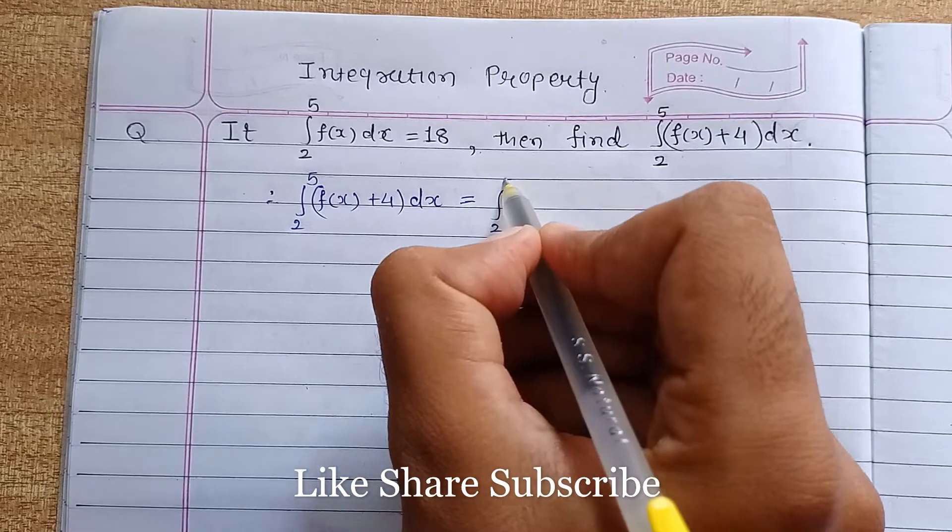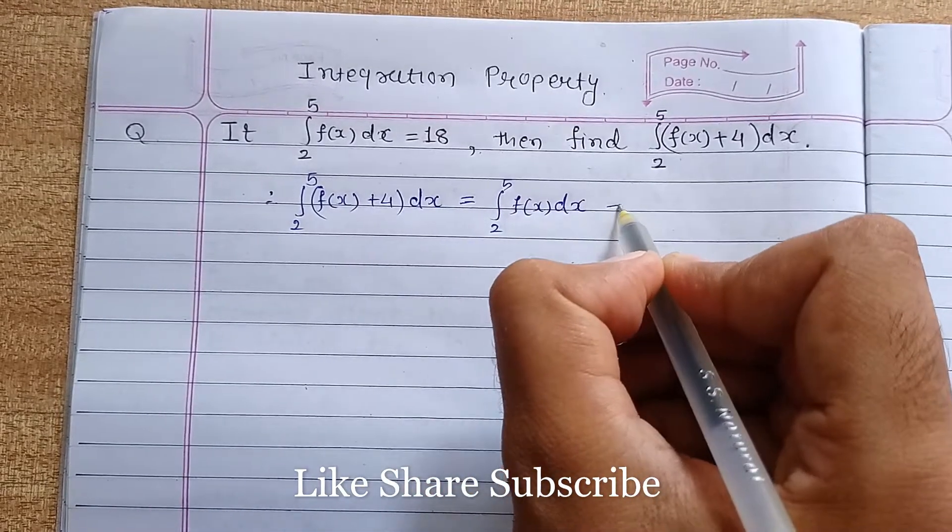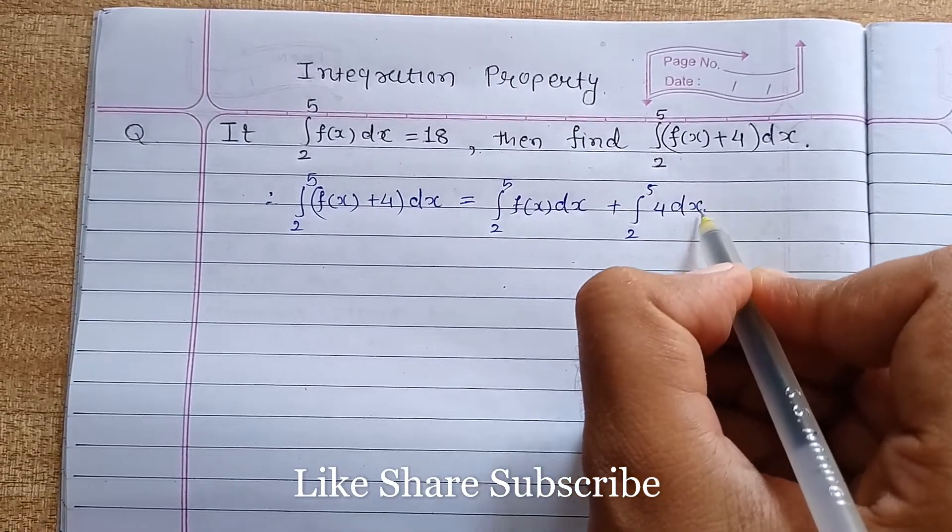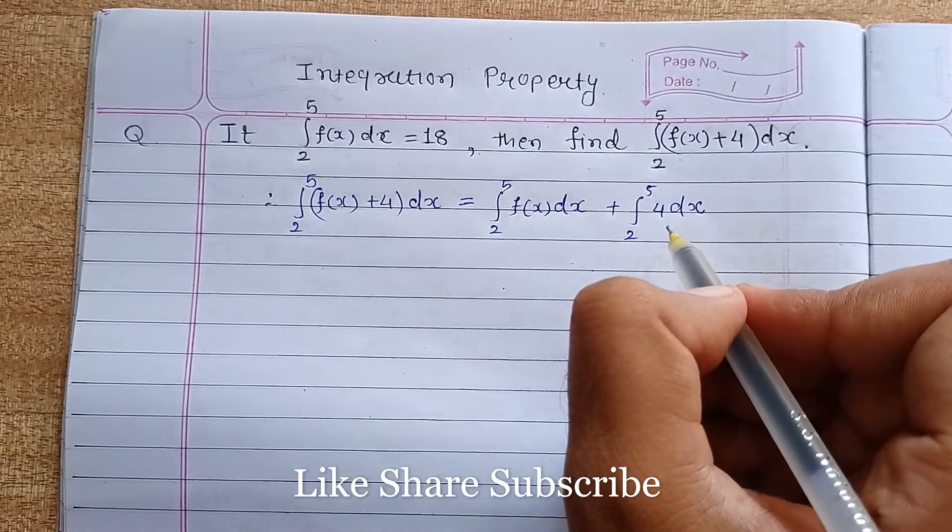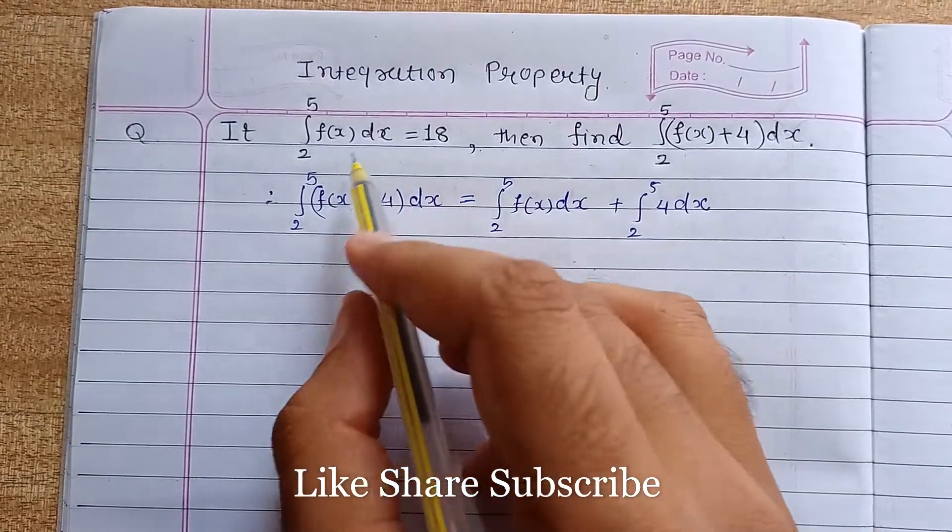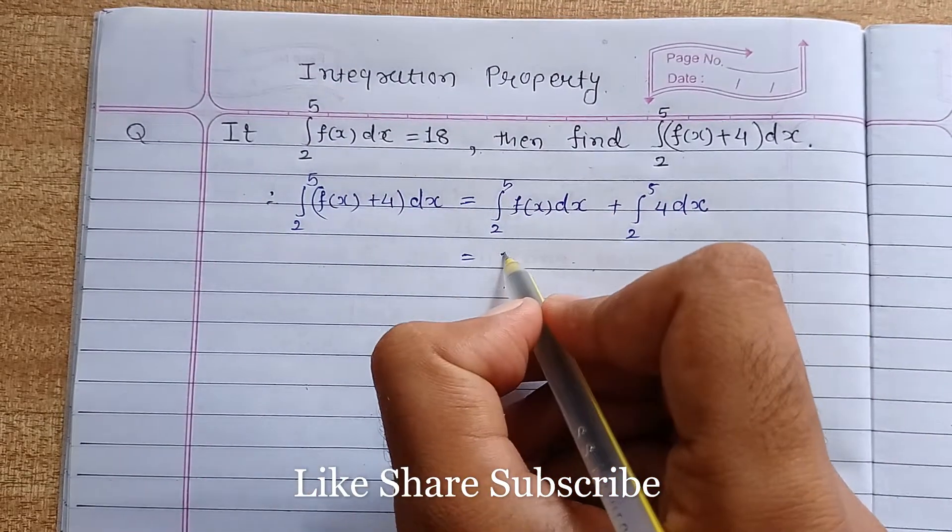Integration 2 to 5 f(x)dx plus integration 2 to 5 of 4dx. 4 is a constant. We know that this term, the integration 2 to 5 f(x)dx, equals 18.